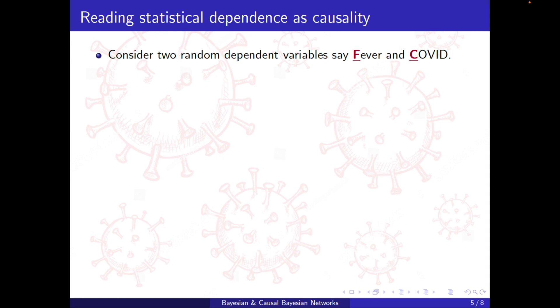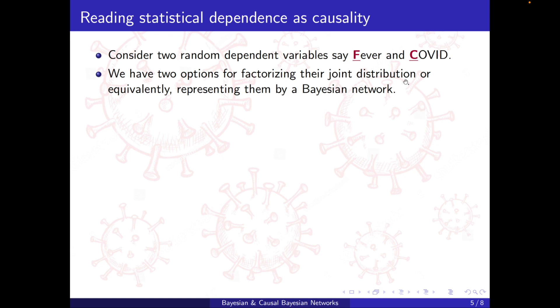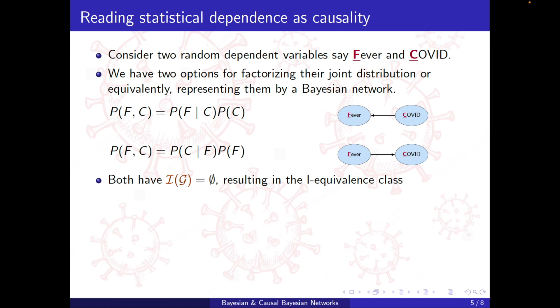To dive deeper into that, consider two random dependent variables, say fever and COVID. We have two options for factorizing their joint distribution or equivalently representing them as a Bayesian network. So one is from COVID to fever, and we know they are depending on each other. So we know that there should be an arrow. We're not considering the case of having them as isolated nodes. So one is in this way, and then the factorization will be P(F|C)P(C). And the other one is the other way around, P(C|F)P(F).